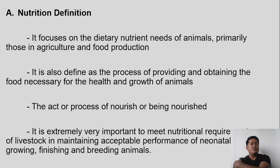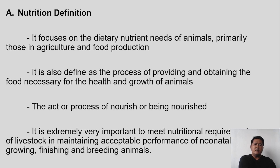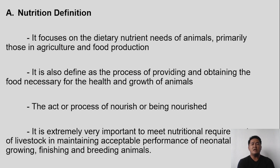Let's define nutrition. Nutrition focuses on the dietary nutrient needs of animals, primarily those in agriculture and food production. It is also defined as the process of providing and obtaining the food necessary for the health and growth of animals. So nutrition involves providing the nutrients, and before the nutrients are provided, the food undergoes processes by which it can be converted for the health and growth of animals.